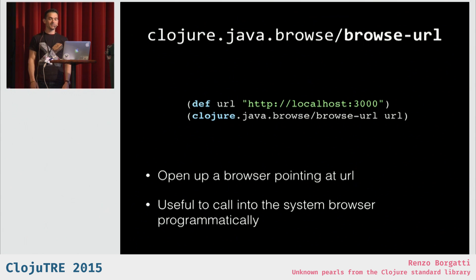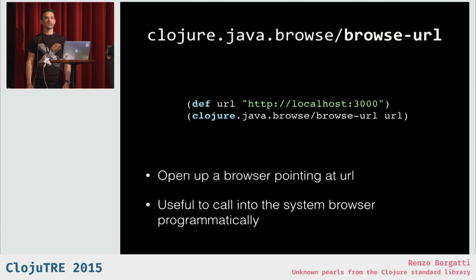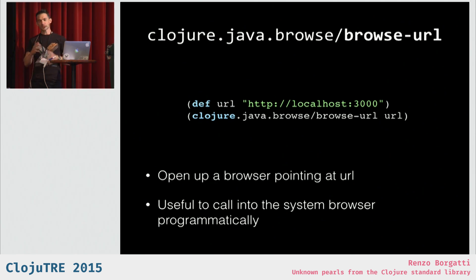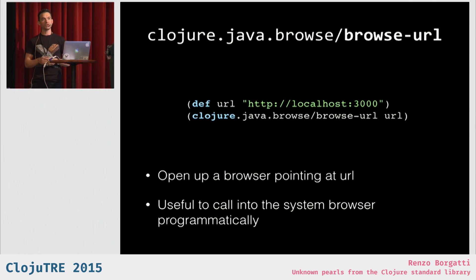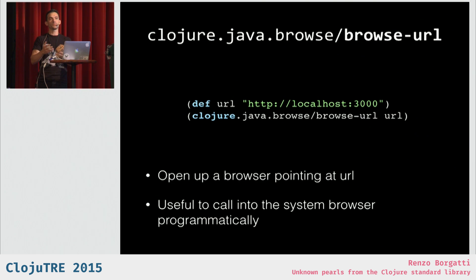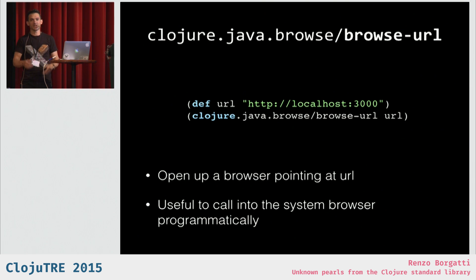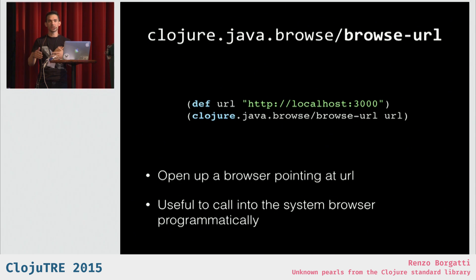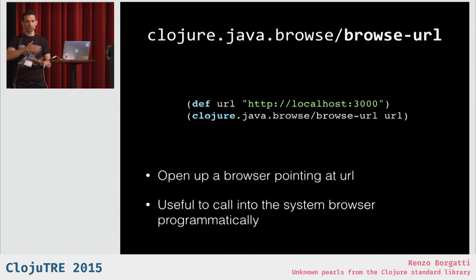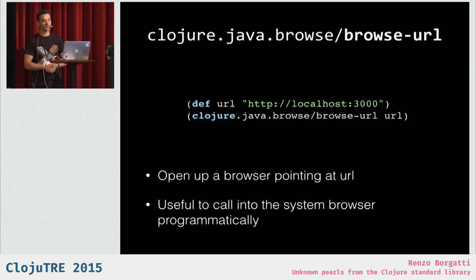Another out-of-the-box thing: `browse-url`. The main purpose is that you can programmatically start a browser pointing at some URL. It can also be useful at the REPL if you want to quickly open a browser at some URL. It takes care of the operating system you're on and how to invoke the default browser.